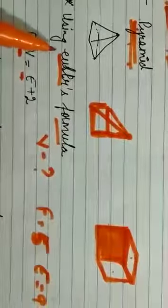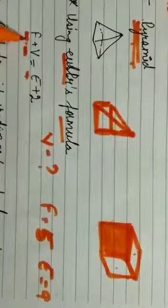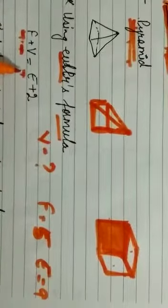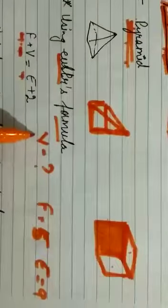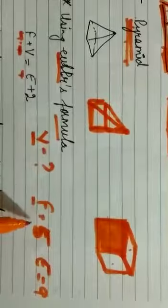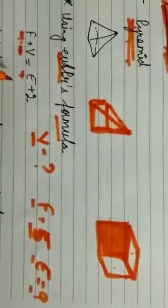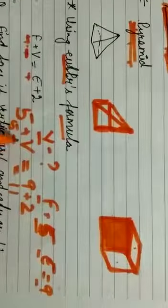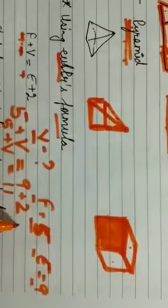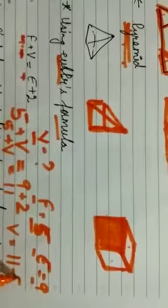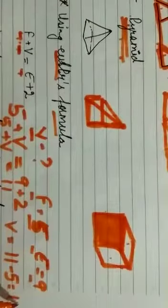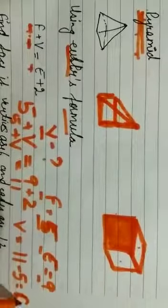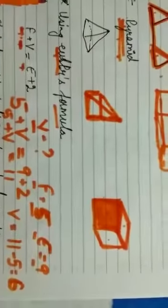Here is an example: we have to find vertices when faces are 5 and edges are 9. Using Euler's formula, F plus V equals E plus 2: 5 plus V equals 9 plus 2, which is 11. So 5 plus V equals 11, meaning V equals 11 minus 5, which gives us 6. Using Euler's formula we are able to find the vertices when faces and edges are given.